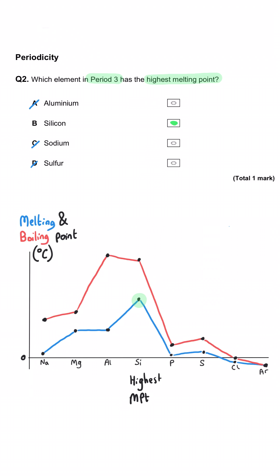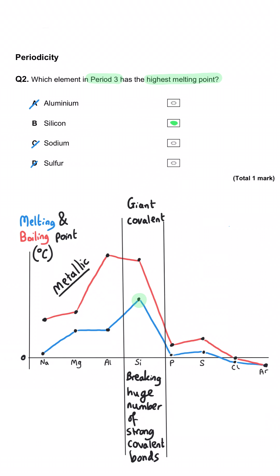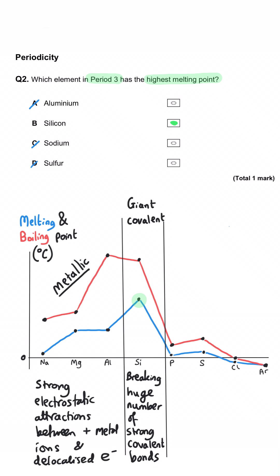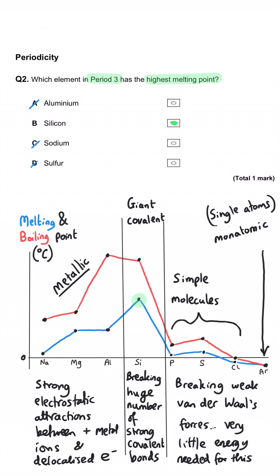The reason that B is the correct answer is that silicon has a giant covalent structure. That means there is a huge number of silicon atoms connected by strong covalent bonds which require a lot of energy to break. That is higher than sodium, magnesium and aluminium which have metallic bonding — strong electrostatic attractions but not as strong or as numerous as the covalent bonds in silicon. Phosphorus through to argon are only connected by van der Waals forces, which are very weak and require very little energy to break.